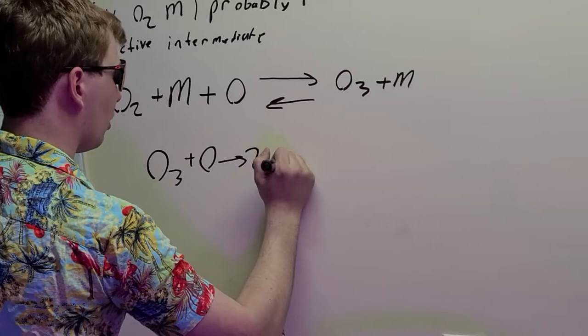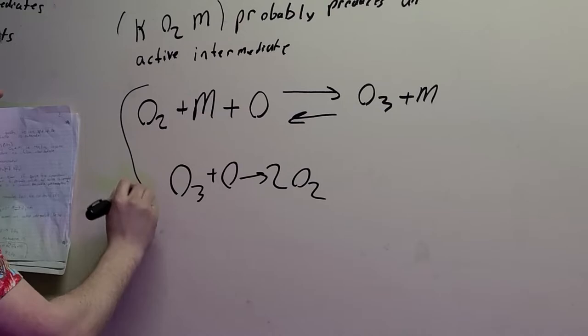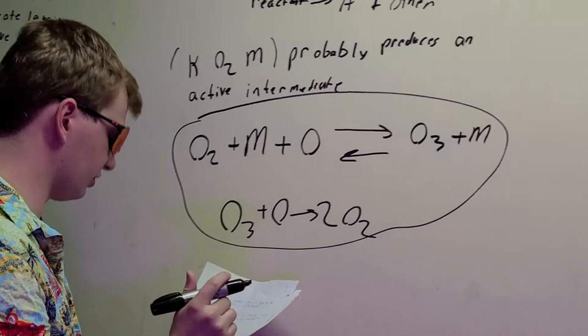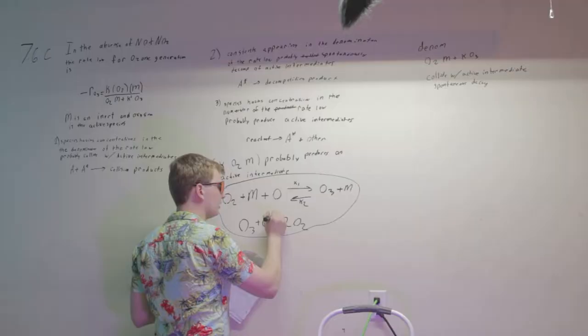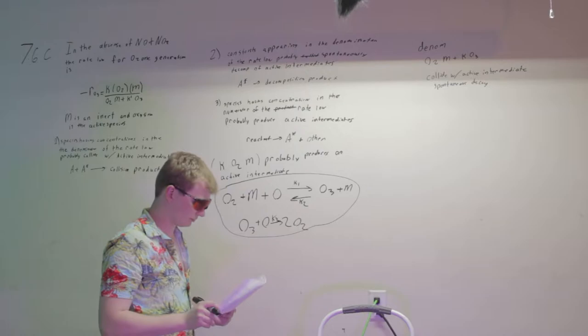So this becomes our mechanism. And we can assign rate constants of this being K1, K2, and finally K3.